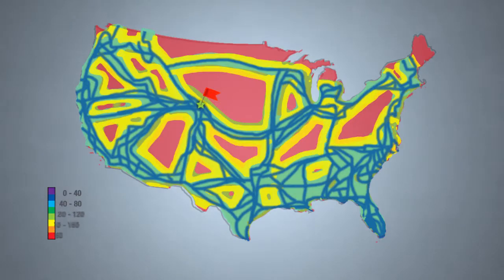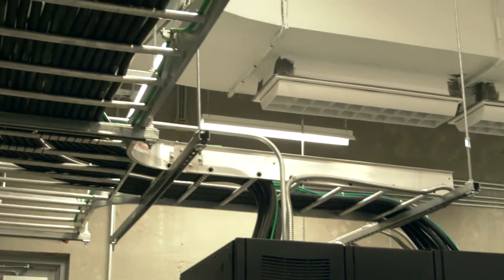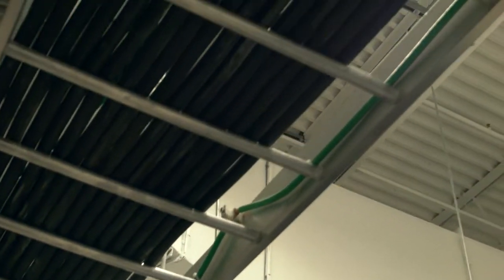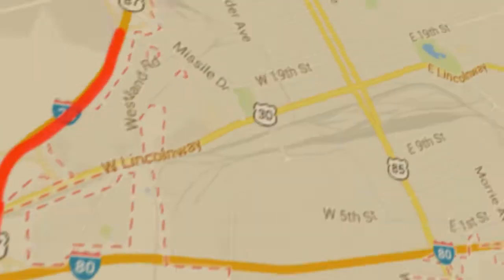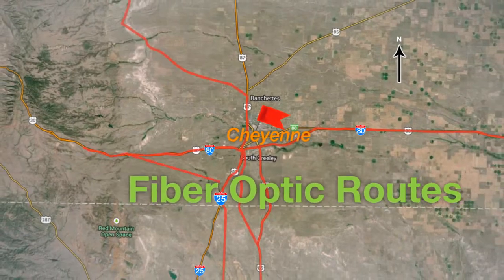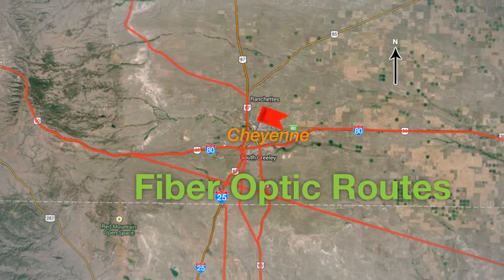One of the reasons Greenhouse Data chose Cheyenne was really the fiber infrastructure, which allows us to jump on multiple Tier 1 carrier national backbones and to offer a premium blend bandwidth to our clients, as well as multiple carrier entrances to the facility for broadband. Just recently we brought in the first 100 gigabit circuit into the state of Wyoming, and now we're really able to leverage the telecom infrastructure that runs right down I-80 and I-25.